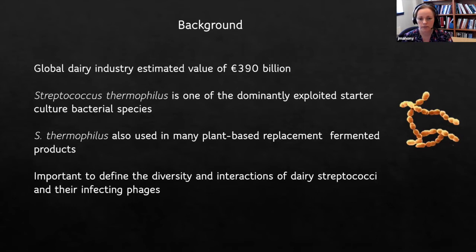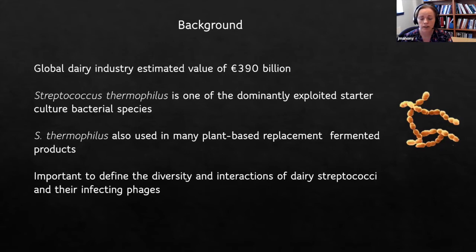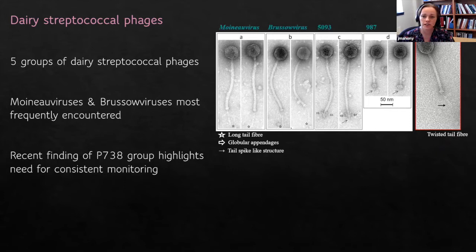So we really need to understand continuously the diversity, ecology, interactions, and evolution of dairy streptococci and their infecting phage. Until recently we thought this was a fairly uninteresting species, because Streptococcus thermophilus has long been demonstrated to be relatively homogenous — and so also were its phage.